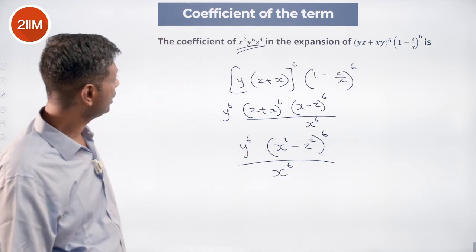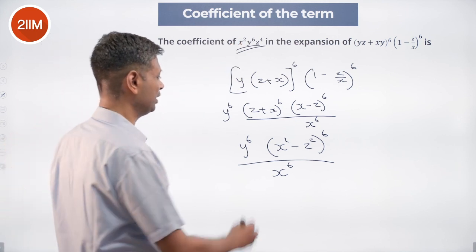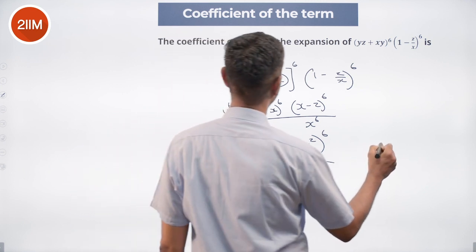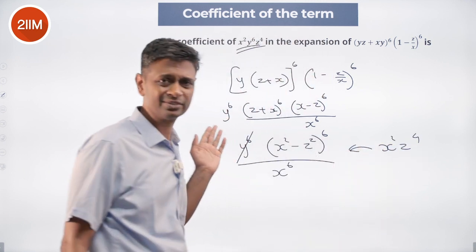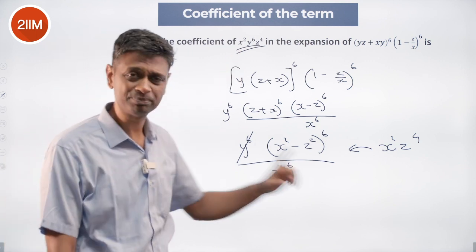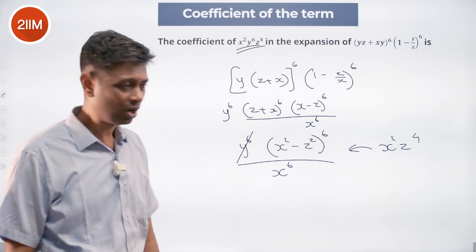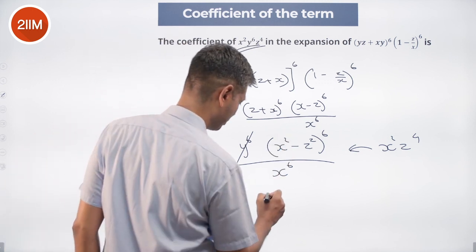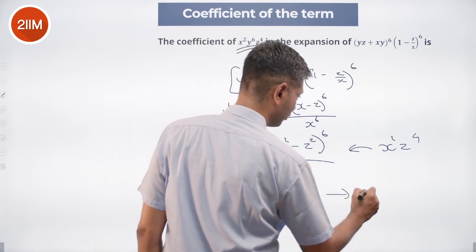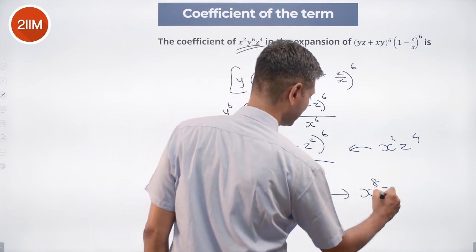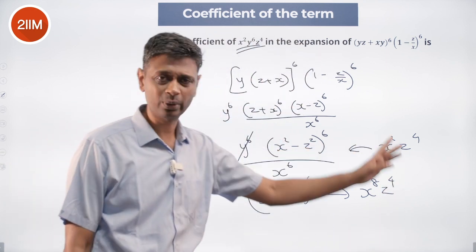So, we want to find the coefficient of x square y power 6 z power 4. That means we need to effectively find the coefficient of x square z power 4 — since y power 6 is going to sit in every term. But then x power 6 is in the denominator, so in the expansion of x square minus z square whole power 6, we need to find x power 8 z power 4, so that x power 6 gets cancelled and we get x square z power 4. Nicely done.